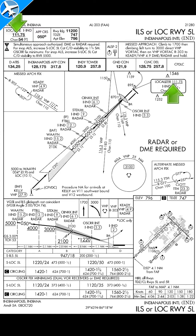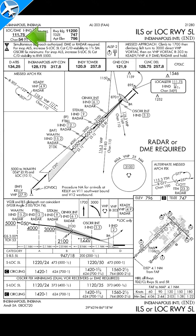The frequency of the localizer is 111.75. The underline means no voice capability on that frequency. The TACN channel is 54, and Y is the mode.